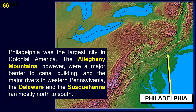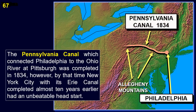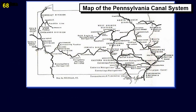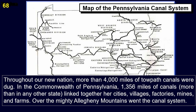Philadelphia was the largest city in colonial America, but the Allegheny Mountains were a major barrier to canal building. Philadelphia's business and political leaders faced the horrendous task of building a canal across Pennsylvania requiring 3,358 feet of lockage and a 4-mile-long tunnel to reach Pittsburgh. The Pennsylvania Canal, which connected Philadelphia to the Ohio River at Pittsburgh, was completed in 1834. However, by that time New York City with its Erie Canal completed almost 10 years earlier had an unbeatable head start. More than 4,000 miles of towpath canals were dug in Pennsylvania — 1,356 miles, more than in any other state — linking cities, villages, factories, mines, and farms.